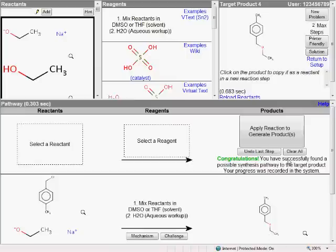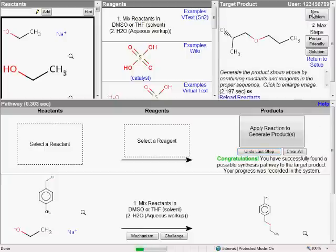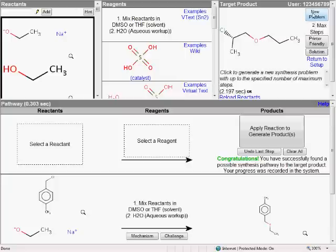When you do this, make sure that you see this line: Your progress was successfully recorded in the system, so you know that the system is actually giving you credit for your work. Once you have completed a problem and want to work on another one, just click on New Problem, and the system will make up another target product based on the same chapters of material.